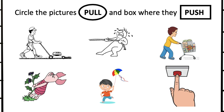So it says circle the pictures that pull and put a box around pictures where they push. So you're going to circle the pictures here. You're going to look at each picture. You're going to decide if they are pulling something, you are going to put a circle around it just like there's a circle around the word pull.